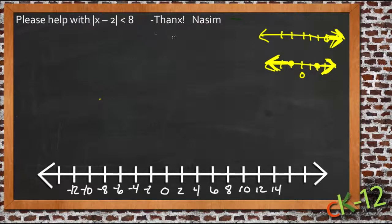So an absolute value inequality is just the combination of an absolute value equation and a regular inequality. So let's see how this pans out here with the question sent in by Nassim. He wanted a little help with graphing the absolute value of x minus 2 is less than 8.